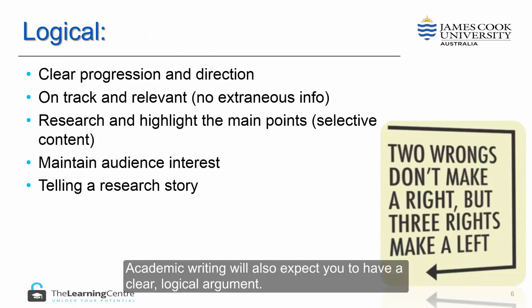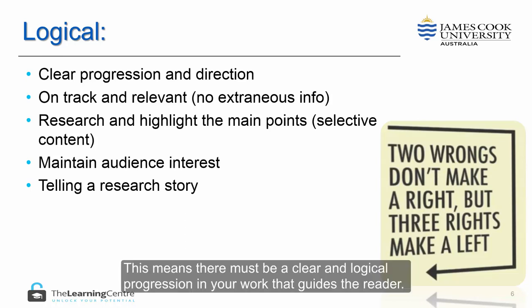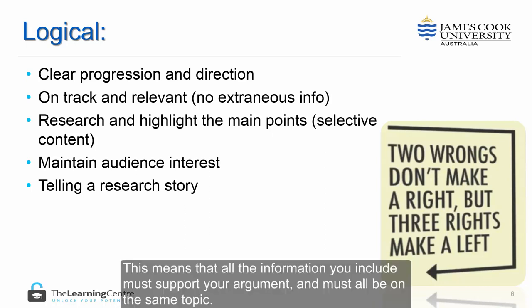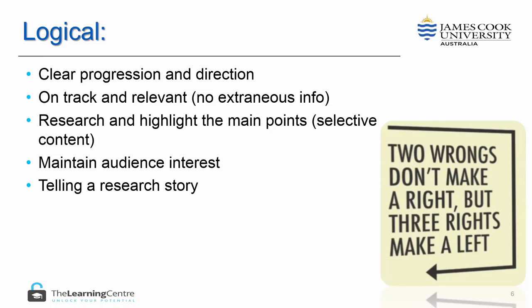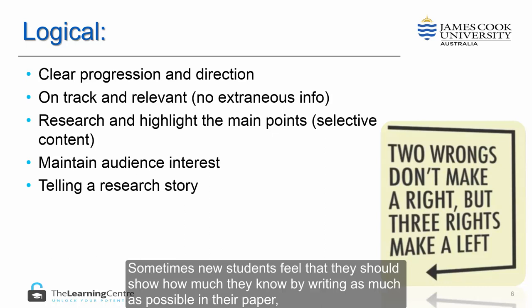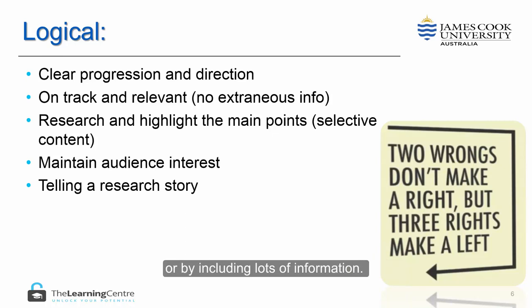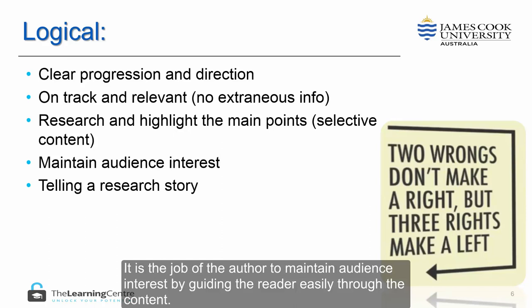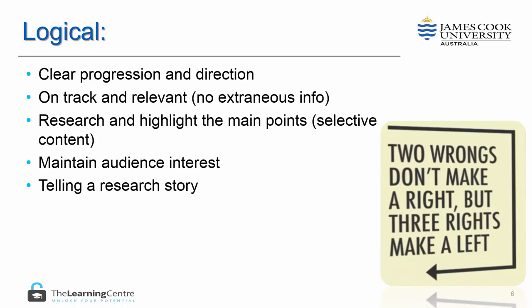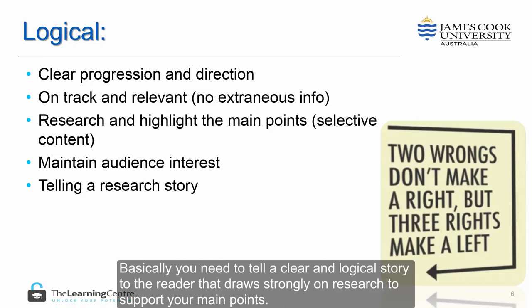Academic writing will also expect you to have a clear, logical argument. This means there must be a clear and logical progression in your work that guides the reader, and all the information you include must support your argument and be on the same topic. Do not include extraneous information that does not support your argument. Sometimes, new students feel they should show how much they know by writing as much as possible or including lots of information, but this is not the best method. You must research from the academic literature to highlight your main points, but you must be selective about what you include. It is the job of the author to maintain audience interest by guiding the reader easily through the content — basically, you need to tell a clear and logical story that draws strongly on research to support your main points.